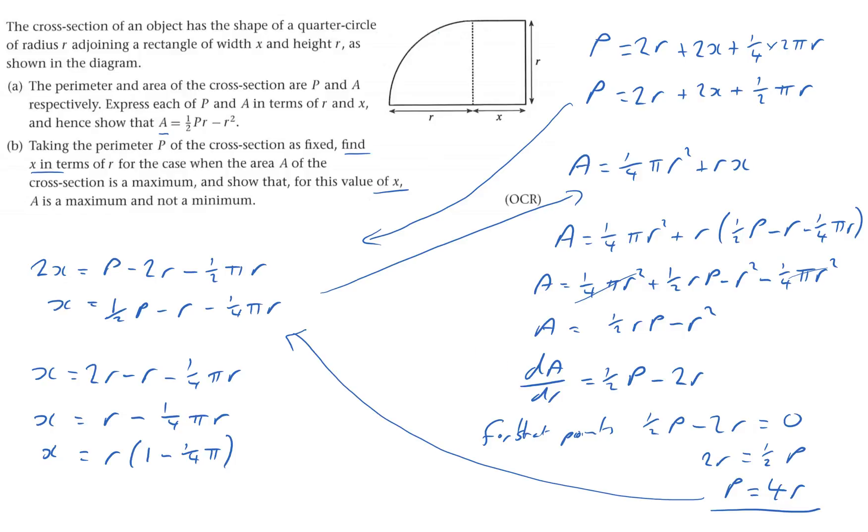And show that it's a maximum, not a minimum. That means I have to work out d²A by dr squared, which equals negative 2, which is less than zero, which implies that it's a max. And that's what we've got.